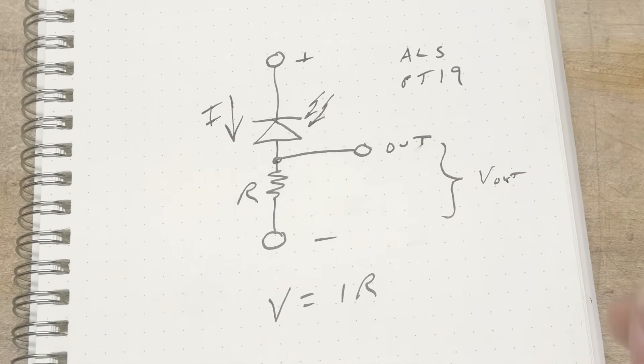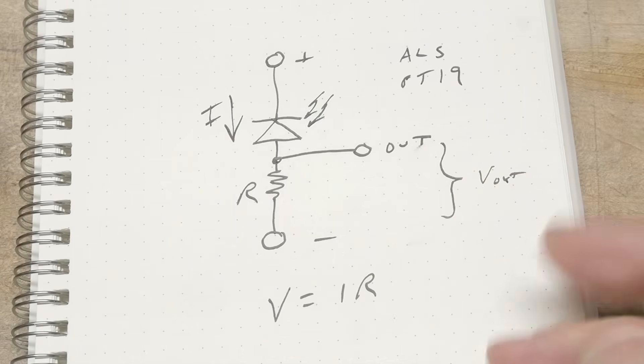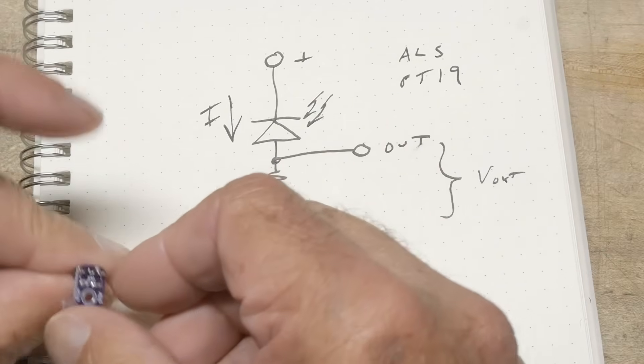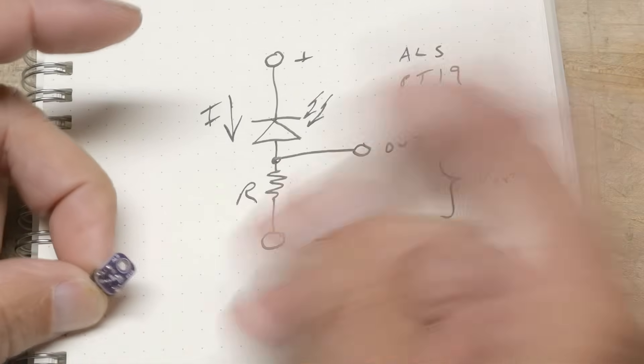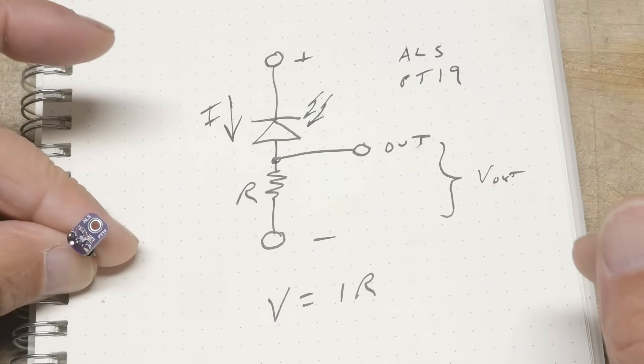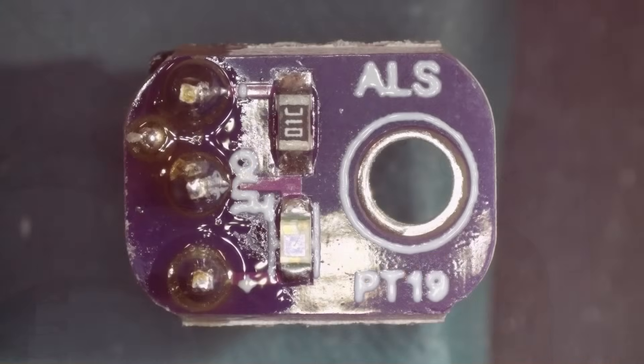So sometimes simple is better, right? If you just need something really easy and just whether something's on or off, or just a real crude is it dark, is it light, then simple is better sometimes. So let me show you some close-up photos here. There's really isn't much to it, there's a resistor and a photodiode, there you go.